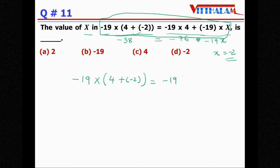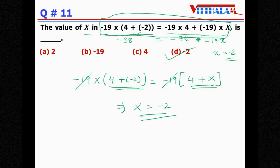So minus 19 minus 19 get canceled therefore x equals to, if you compare this, x equals to minus 2 so answer is D. Don't do this way, the first one is for the average student not for us, we are smarter.